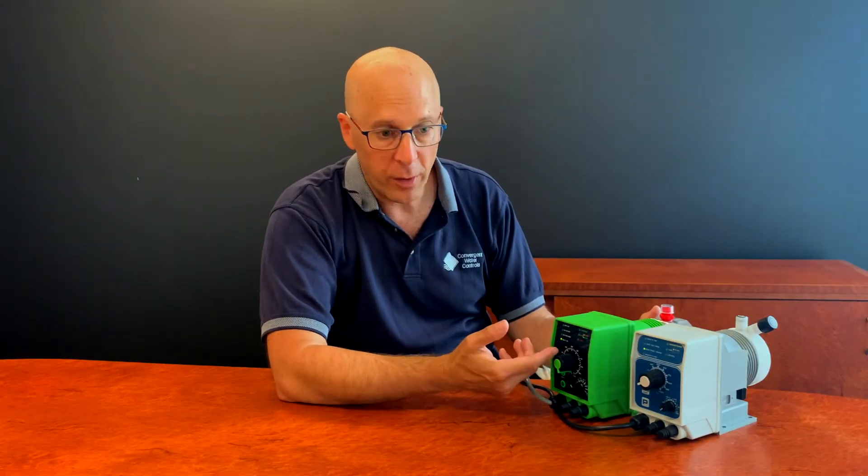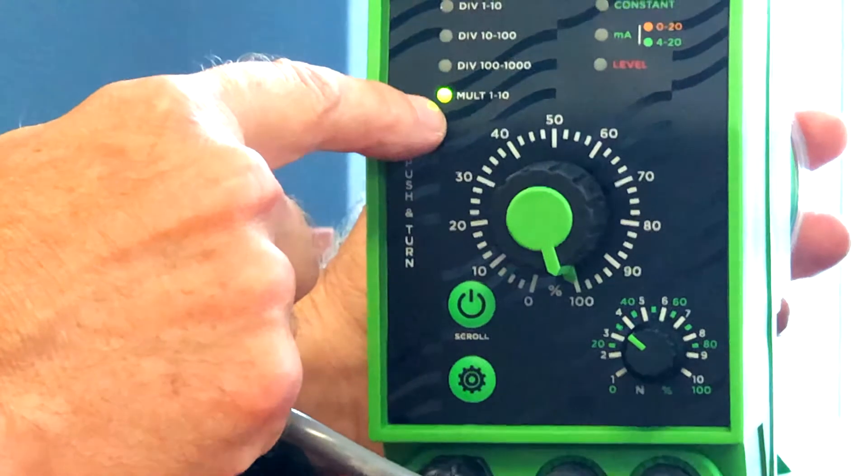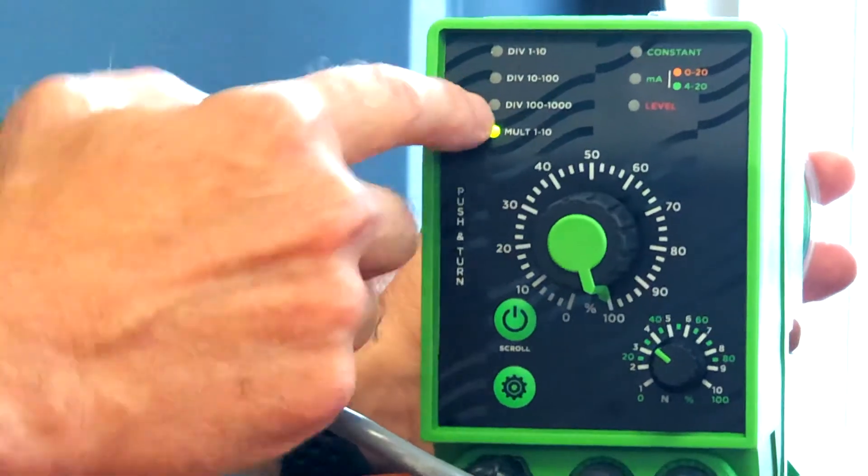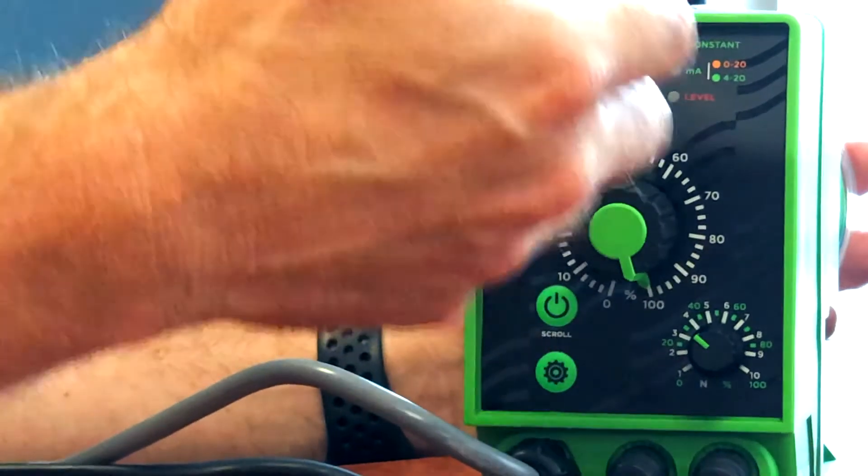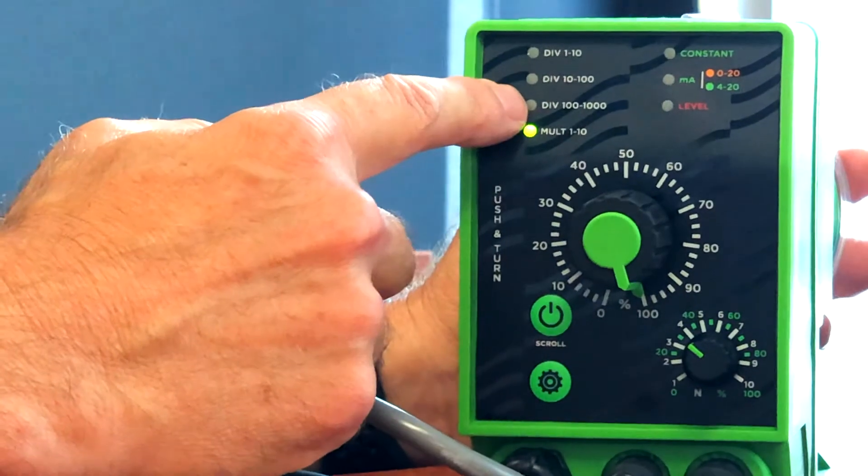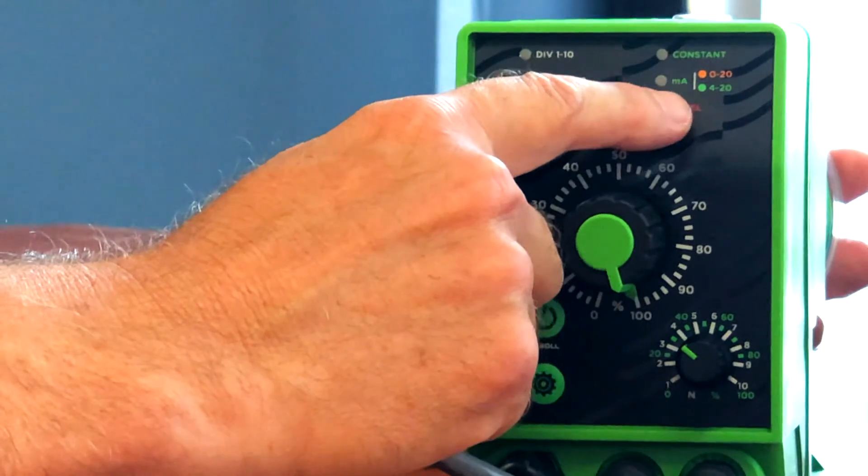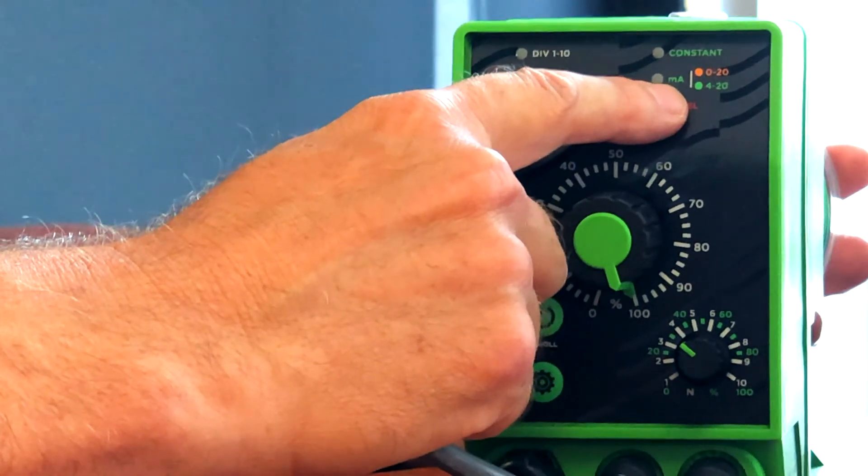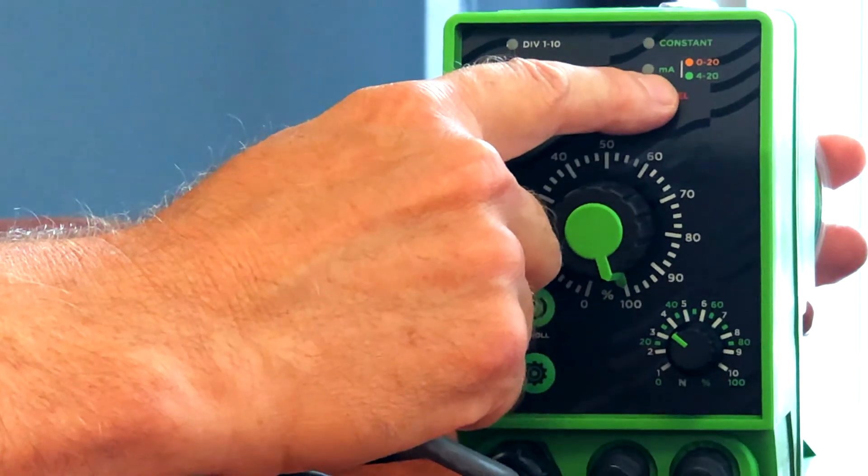The other modes that we have are multiply 1 to 10. We also have dividing modes, which means that you have to receive a number of pulses before you give one stroke. The pump can also dose proportional to an external milliamp signal, which can be 4 to 20 milliamp or 0 to 20 milliamp.